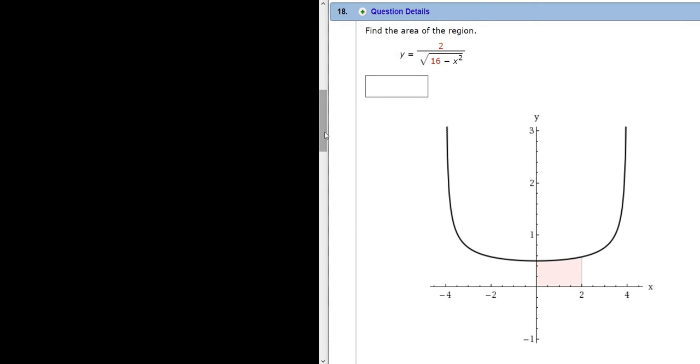In this problem we have to find the area of the region here. So let's go ahead and work through it. The area of this region is going to be the definite integral, and we're going to go from 0 to 2. So it's x values, left to right, 0 to 2.